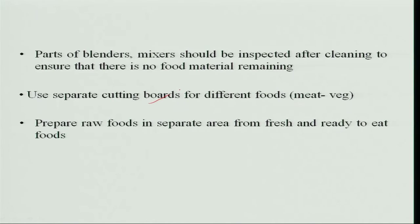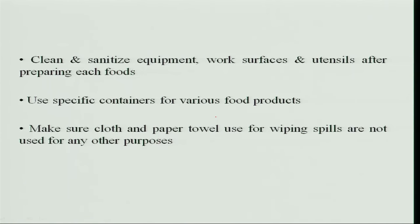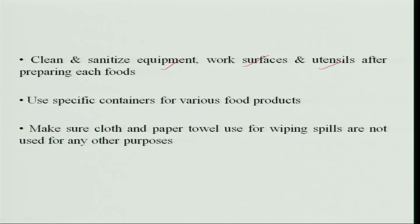Use separate cutting boards when you cut meat and vegetables — the same cutting board cannot be used because meat has many microorganisms which can spread onto the vegetables. Prepare raw foods in a separate area from fresh and ready-to-eat foods. Clean and sanitize the equipment that is used. The work surface should be cleaned after cooking is over, because food remaining there attracts bacteria. Use specific containers for various foods, and make sure cloth and paper towels used for wiping spills are cleaned after use and not reused repeatedly, as they carry many microorganisms.